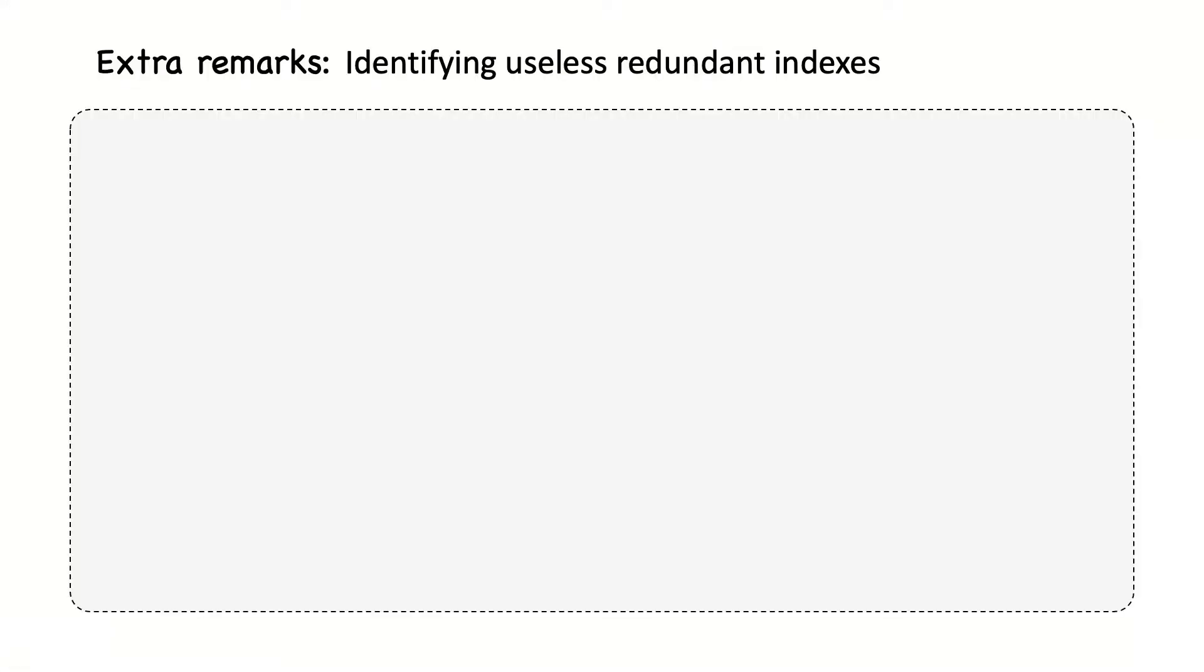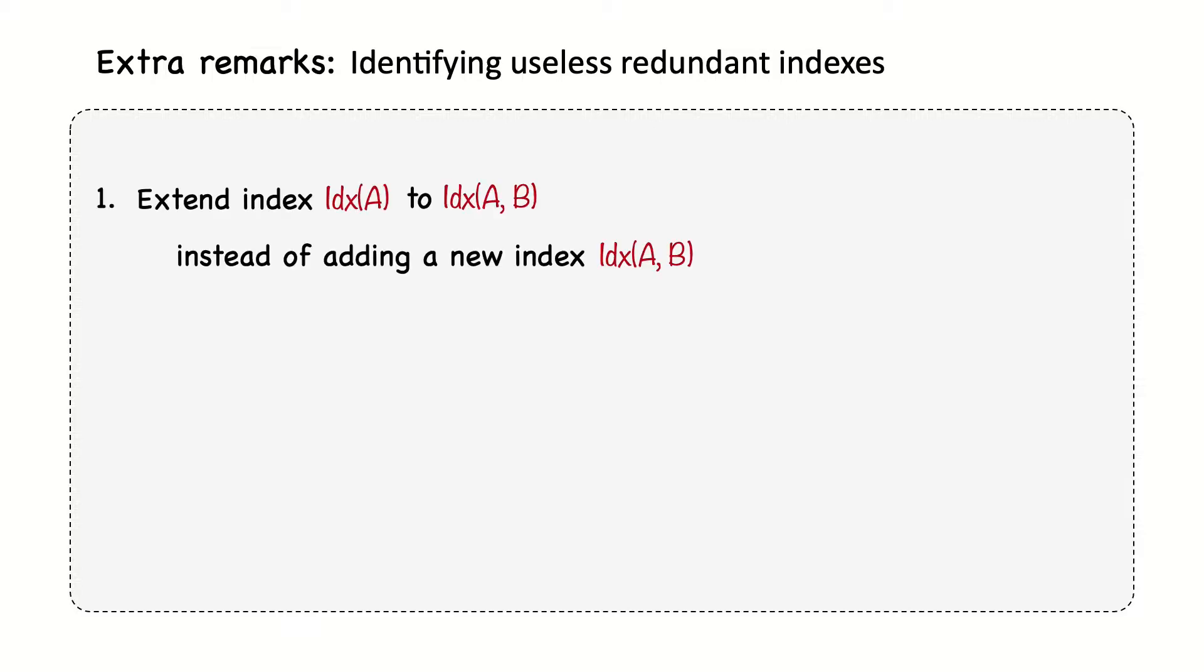But when do these indexes usually appear? This kind of useless indexes usually appear when someone might add a new index on A, B, instead of extending an existing index on A. Another way this could happen is by changing the index to cover A and id, where the id column is the primary key, so it's already included.